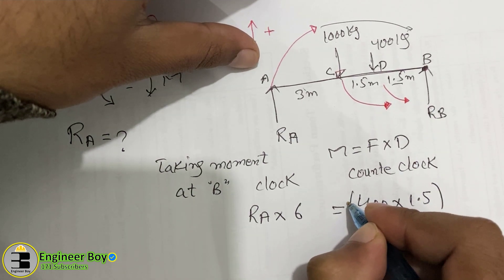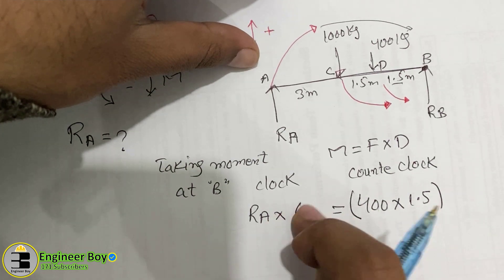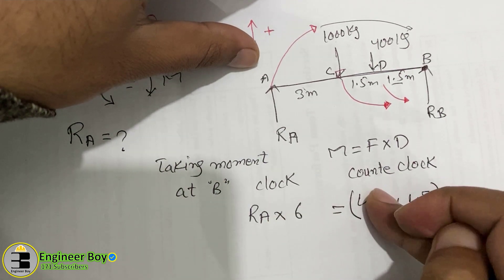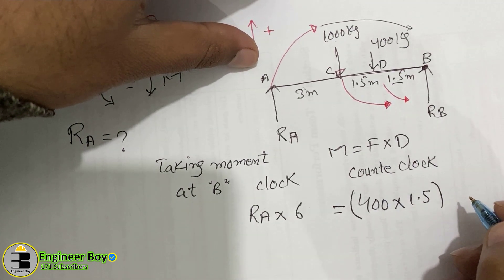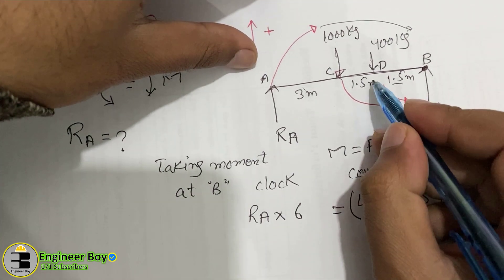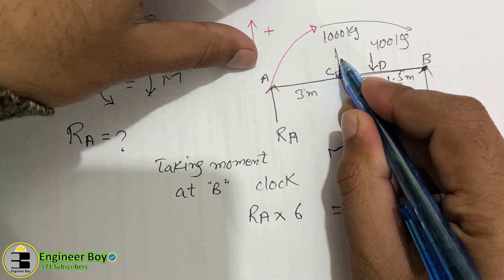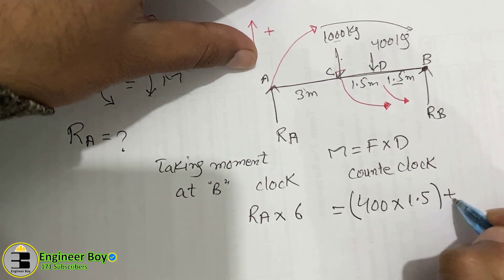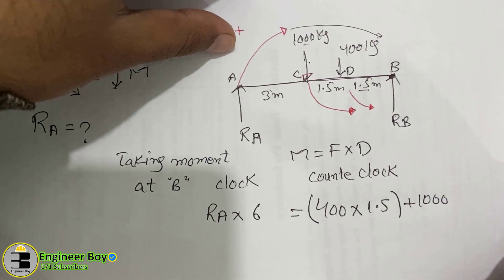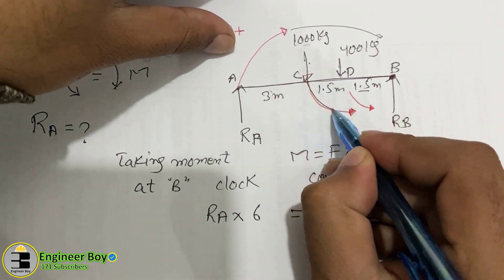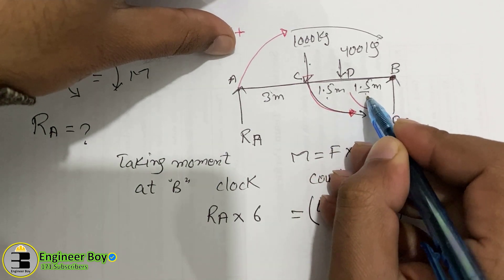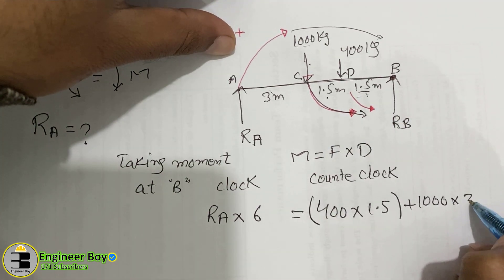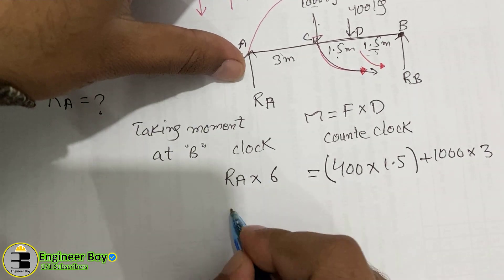Continuing the counter-clockwise side: the 1000 kg load is at a distance of 1.5 + 1.5 = 3 meters from B. So the full equation is: RA × 6 = 400 × 1.5 + 1000 × 3.